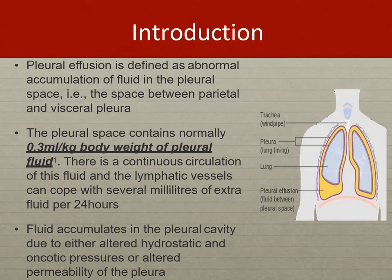Pleural effusion is defined as abnormal accumulation of fluid in the pleural space. The pleural space normally contains about 0.3 ml per kg of pleural fluid, and its production is 0.01 ml per hour per kg. The interplay between lymph, capillary leak, and re-uptake by lymphatic vessels leaves around 5 to 15 ml of pleural fluid in a normal person. If the amount of fluid increases beyond that, it is called pleural effusion.